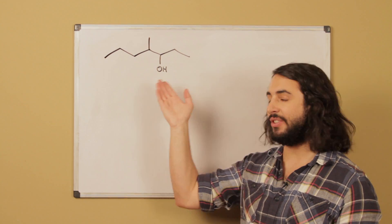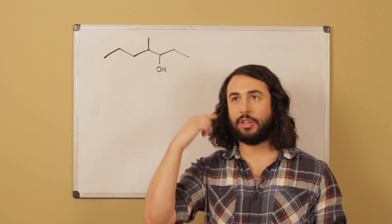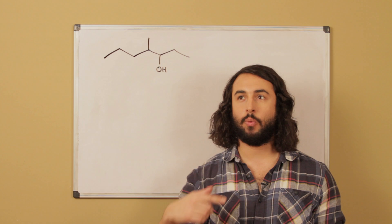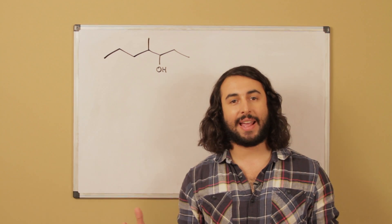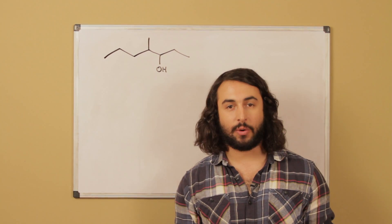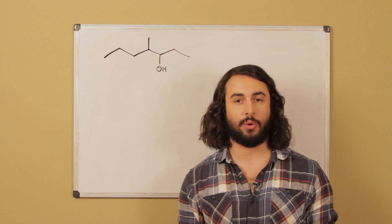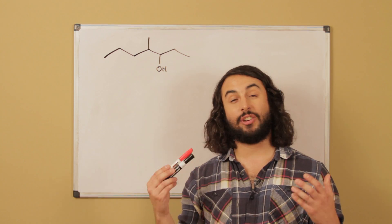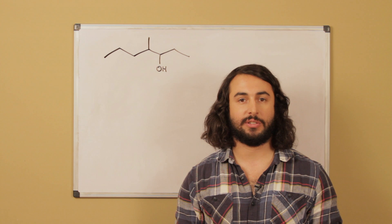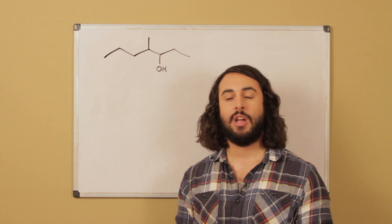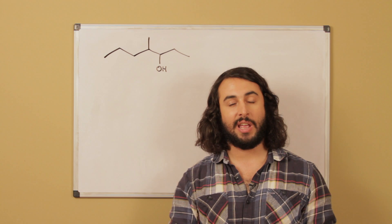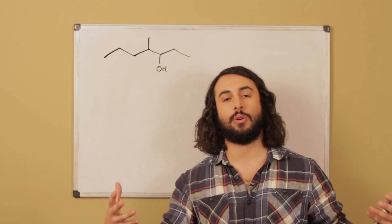Looking at the target molecule, this is an alcohol, and so we want to go through our database of reactions and say what reactions do I know that make alcohols. Now if we're in an organic one course or maybe an organic two course, we know that grignard reactions make alcohols. So a grignard reaction is going to be a very good approach because number one it forms alcohols and it also makes new carbon-carbon bonds, so it takes small molecules and combines them.